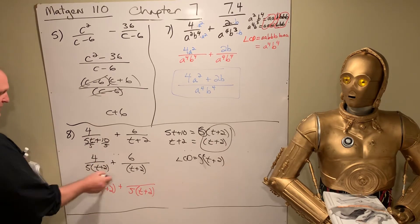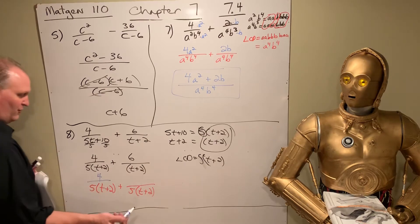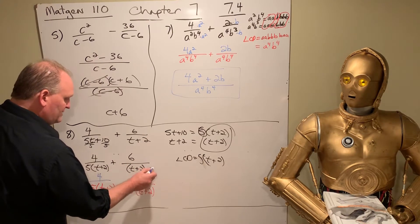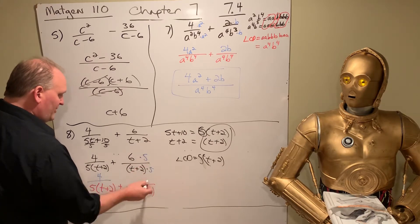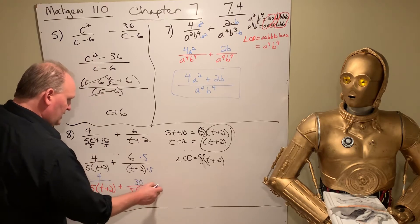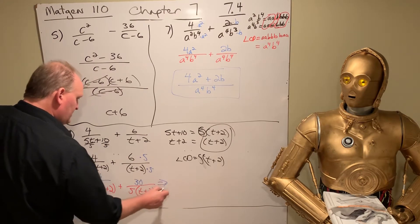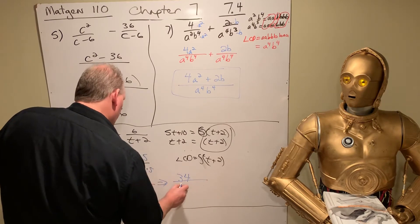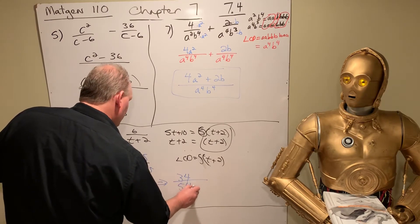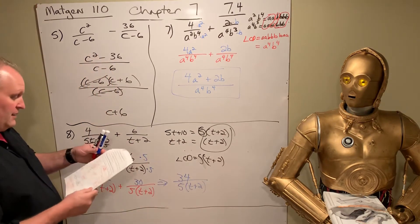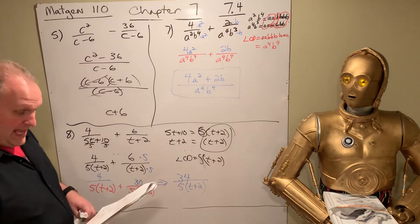This one, it's missing a 5. So I multiply top and bottom, both numerator and denominator by the same number. That's essentially 1. 30. And so this is equal to 34 over 5 times quantity T plus 2. And that is our answer for that one. That's number 8.